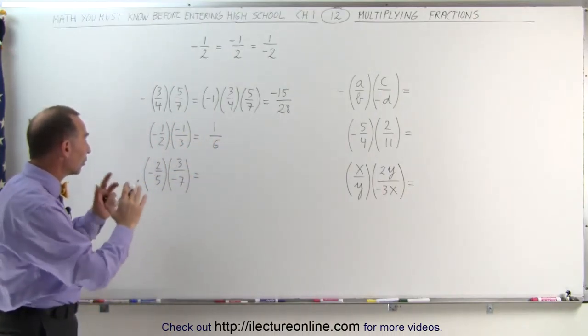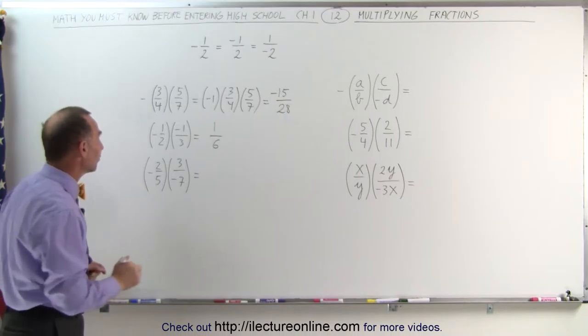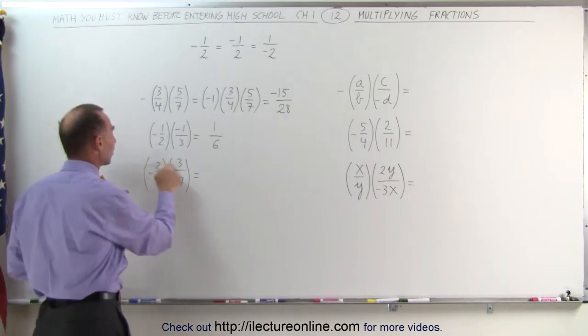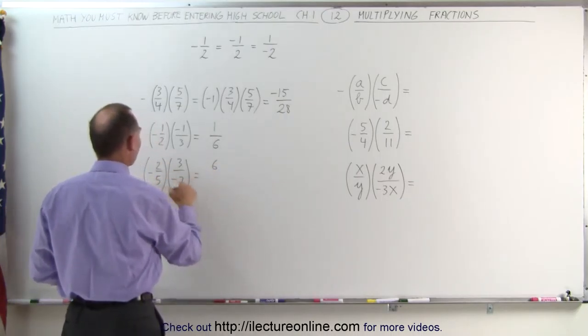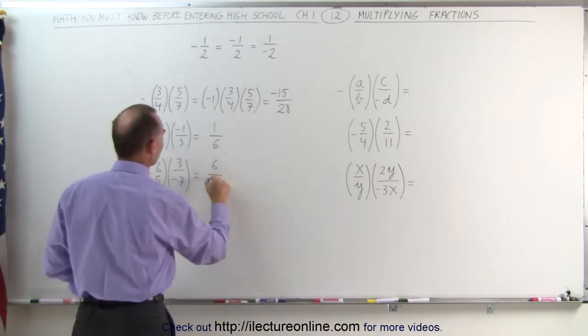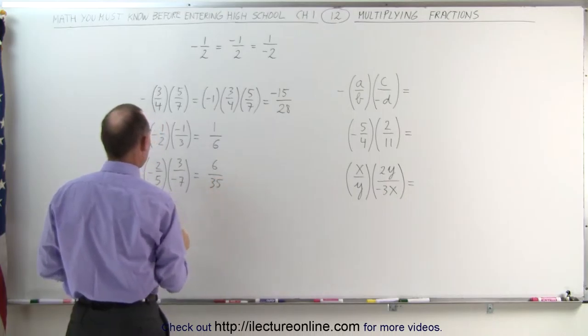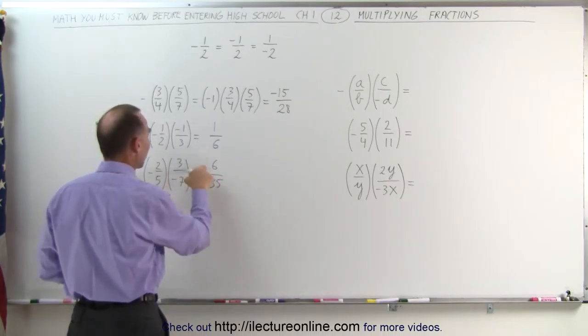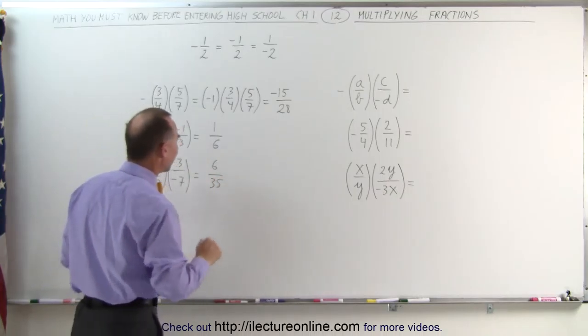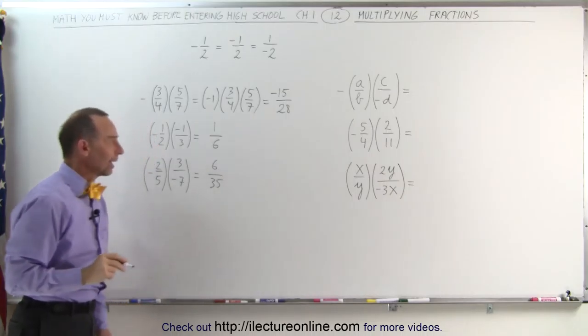Here again, we ignore the negative signs first. 2 times 3 is 6 in the numerator; 5 times 7 is 35 in the denominator. There are two negative signs — negative times negative gives us positive. Therefore, the correct answer is 6 over 35.